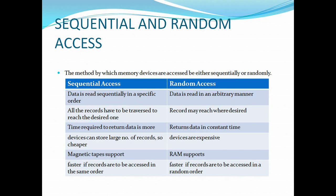Memory can be accessed either sequentially or randomly. In sequential access, data is read in a specific order — sequentially, one after another. In random access, data is read in an arbitrary manner — you can jump from one location to any other location.